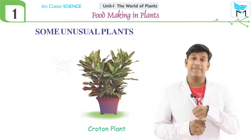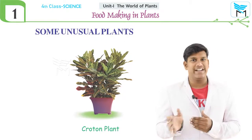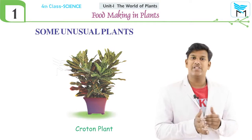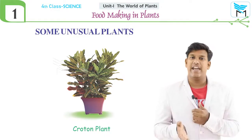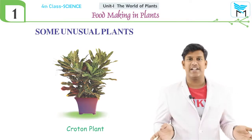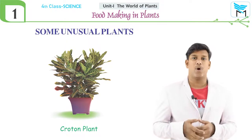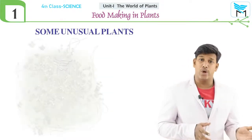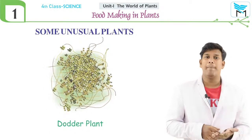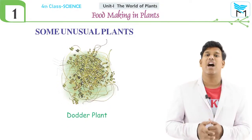The plant known as croton has a different color — its leaves are red in color. This plant consists of chlorophyll, but the leaves are red in color. They have the capacity of preparing their own food like all other plants, but are red in color. Another unusual plant is dodder, which depends upon other plants for food and cannot prepare its own food.